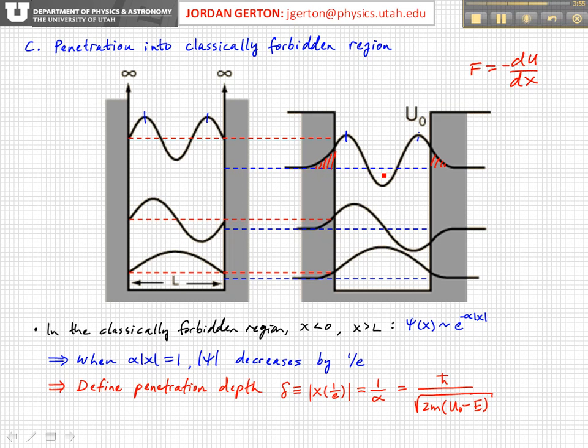of finding the particle outside the well. We also notice that the higher the energy is - that is, the closer E gets to U₀, the closer to the top of the well - the particle penetrates even further into this classically forbidden region. The exponential decay constant alpha becomes slower and slower.